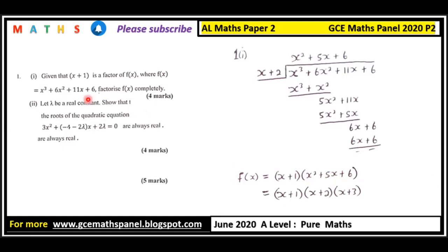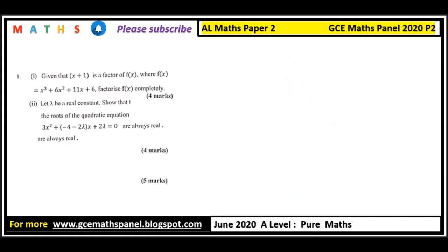The second part of this question, which a lot of students find difficulty in, is: let lambda be a real constant. Show that the roots of the quadratic equation 3x² + (−4 − 2λ)x + 2λ = 0 are always real. Now we know the condition for the roots of a quadratic to be real. For the roots of a quadratic to be real, the discriminant must be greater than or equal to zero. So that is what we are going to use in this proof.